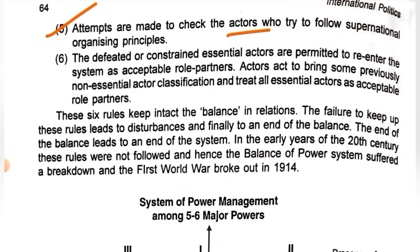The sixth rule is: defeated or constrained actors are permitted to re-enter the system. Defeated states should be allowed to re-enter the system. These were the six principles of the balance of power model.